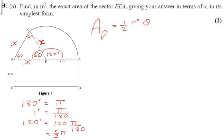So we're going to substitute in to our equation. We've got a half R squared we know is x squared, and theta is 2 over 3 pi. Our 2's are going to cancel, and we're going to be left with pi over 3 x squared.